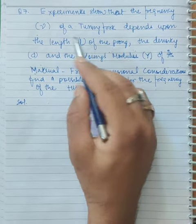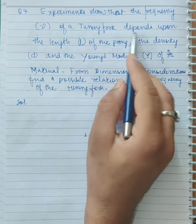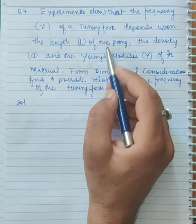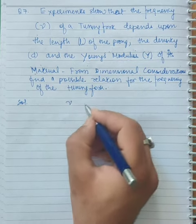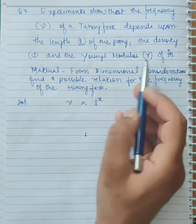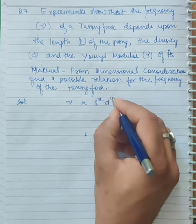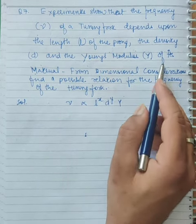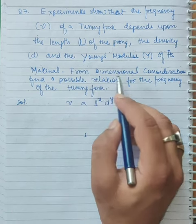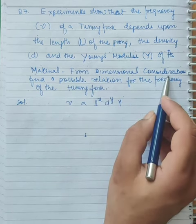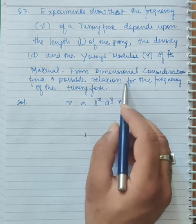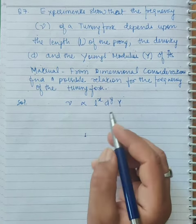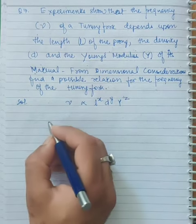Experiments show that frequency nu of a tuning fork depends upon the length L of the prong, the density d, and the Young's modulus Y of its material. From dimensional considerations, find a relation between the frequency of the tuning fork and all these variables.